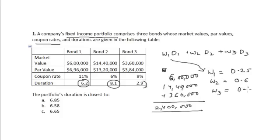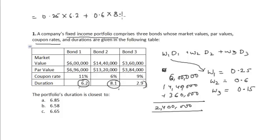Putting in the values of d1, d2, d3 with weights w1, w2, w3, the duration of the entire portfolio equals 0.25 × 6.2 plus 0.6 × 8.1 plus 0.15 × 2.9, which equals 6.85.